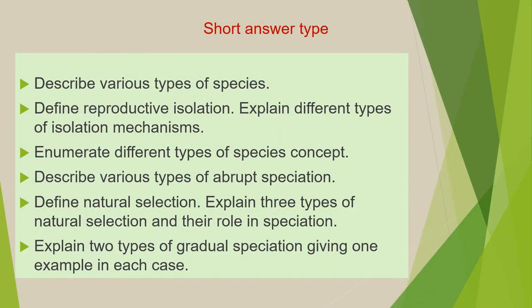The next category is short answer type questions, which you have to answer in a single paragraph. The first question of this category is: describe various types of species. Next is: define reproductive isolation and explain different types of isolation mechanisms. Next is: enumerate different types of species concept. Next is: describe various types of abrupt speciation. Next is: define natural selection and explain three types of natural selection and their role in speciation. Next is: explain two types of gradual speciation, giving one example in each case.